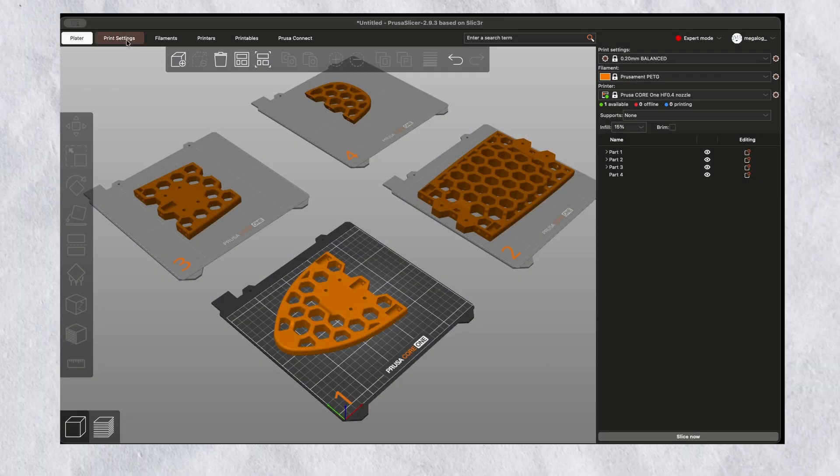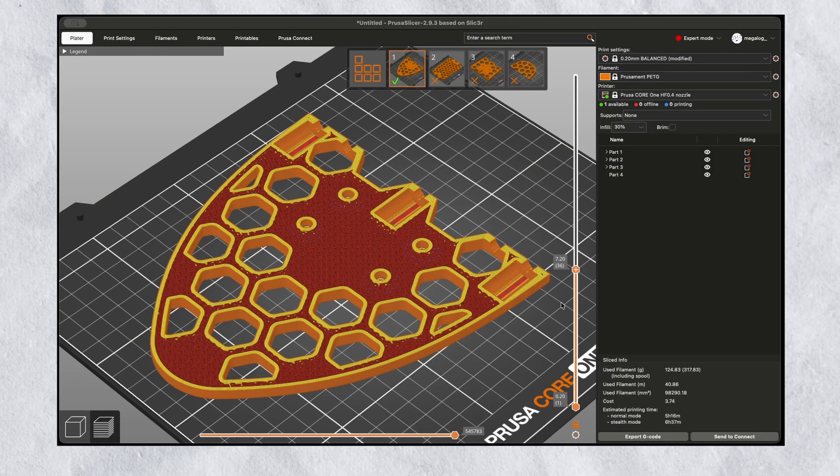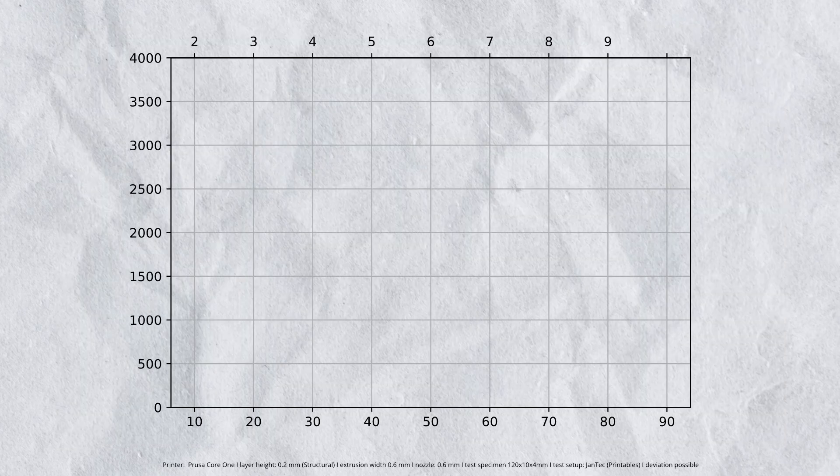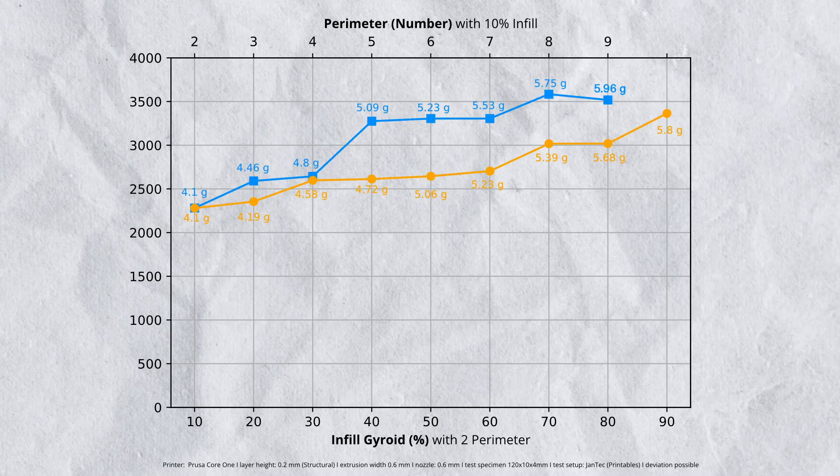Now that we know which filament to use, next question is: how many perimeters and how much infill gives the stiffest print? I test this as well. In the result, the blue curve shows the number of perimeters and the orange curve shows the infill percentage. You can clearly see that adding more perimeters has a much bigger effect on the stiffness than increasing the infill. And going from 30 to 60% infill doesn't make the material much stiffer. For my skateboard I chose 5 perimeters and 30% gyroid infill which gives the best stiffness to weight ratio.